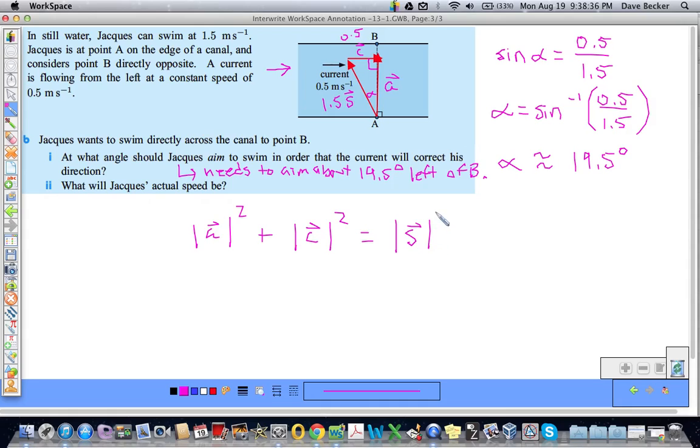The magnitude of A squared plus the magnitude of C squared must equal the magnitude of S squared. Simple Pythagorean theorem. Easy peasy. I'm not going to bore you with all this. So the magnitude of A is going to be equal to the square root of the magnitude of S squared. So that's 1.5 squared. I would have to subtract this and then take the square root. Minus 0.5 squared.